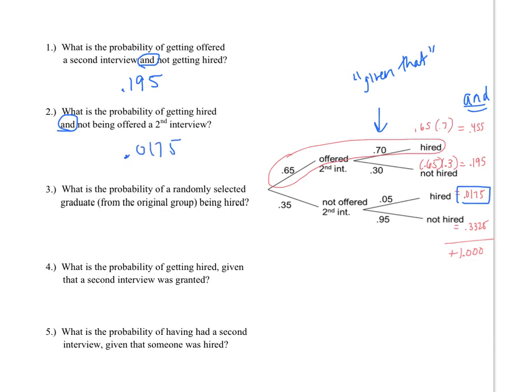Question three asks: what is the probability of a randomly selected graduate from the original group being hired? There are multiple ways to get hired — we could have a second interview and get hired, or no second interview and get hired. Looking at all possible ways to get hired, outlined in green, we add those two decimals together, and our answer is 0.4725.